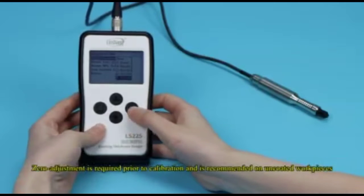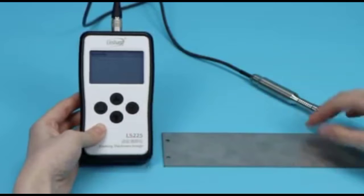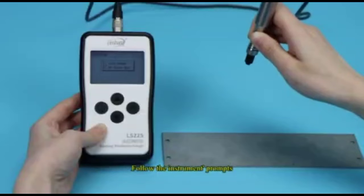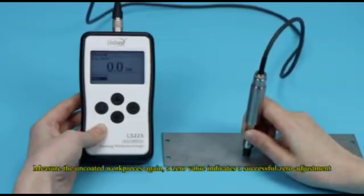Zero adjustment is required prior to calibration and is recommended on uncoated workpieces. Press the probe vertically on the uncoated workpieces. Follow the instrument prompts. Measure the uncoated workpieces again. A zero value indicates a successful zero adjustment.